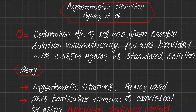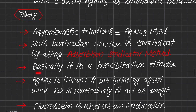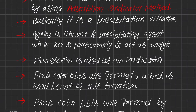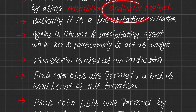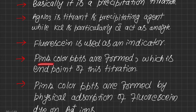Previously we carried out this titration using Mohr's method, in which we used K₂CrO₄ as an indicator. In this titration we are using another method called the adsorption indicator method. Silver nitrate is the titrant and precipitating agent, while KCl — and particularly chloride — acts as the analyte. The indicator we are using is fluorescein.